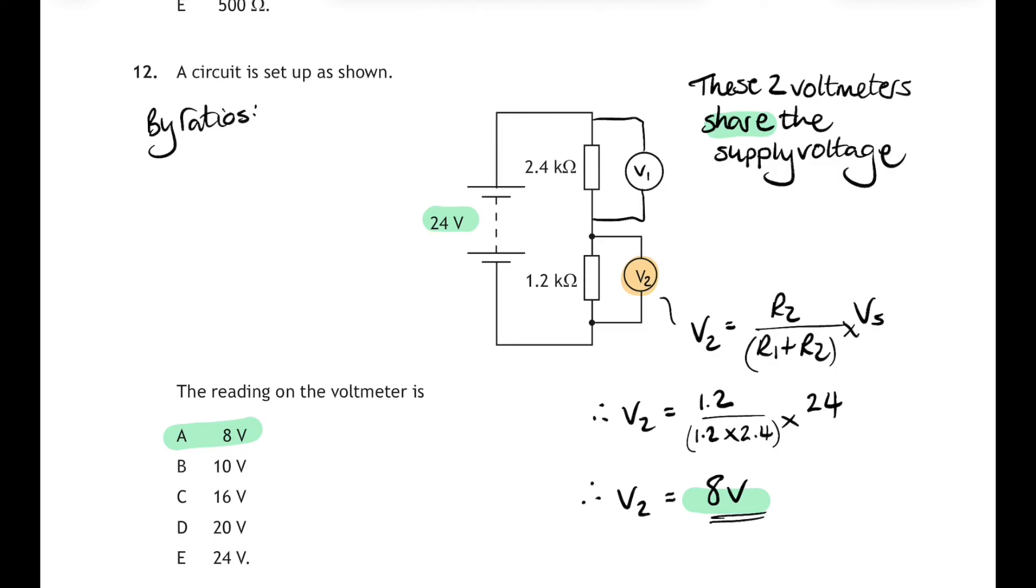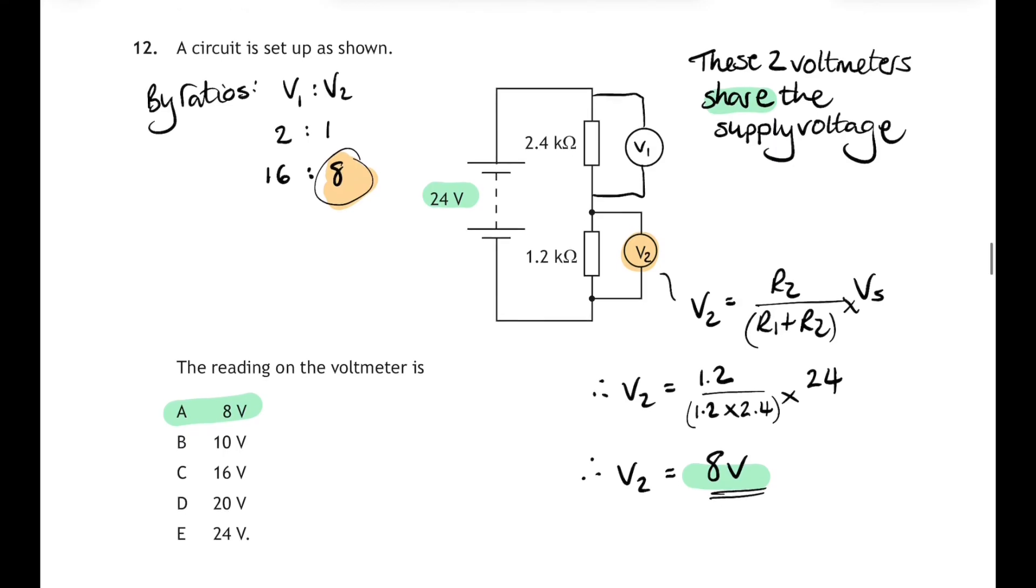So it's 8 volts that we're looking for, and that corresponds to answer A. Now you could also have done this by looking at the ratio of the two resistors. So if we think about both those voltmeters there, the top resistor is twice as big as the bottom resistor, so V1 will be twice as big as V2. There's a 2 to 1 ratio, but we have to split up the 24 volts in a 2 to 1 ratio, so that would be 16 to 8. So the bottom voltage V2 is 8 volts—same answer. So if you're not confident with ratios, then make sure you use the relationship.